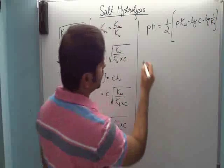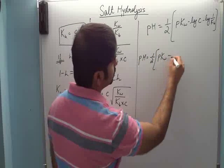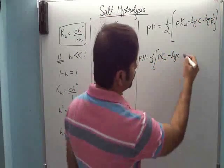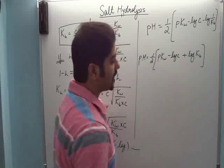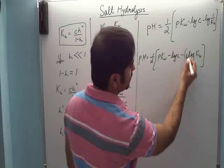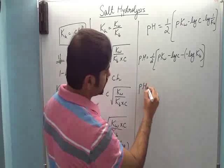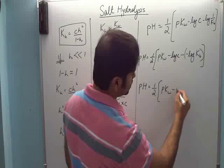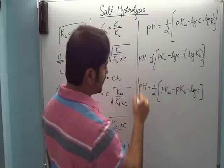Ab is ko thoda manipulate karna hai. This becomes pH is equal to half: pKw minus log C. Is ko minus log of 1 by Kb ko main plus log of Kb likh sakti ho. Ab is plus log Kb ko, is plus ko hata ke ek minus yaha pe aur ek minus yaha pe bhi likh sakti ho. Aur yeh to bracket ke andar minus log Kb hai, this becomes pKb.